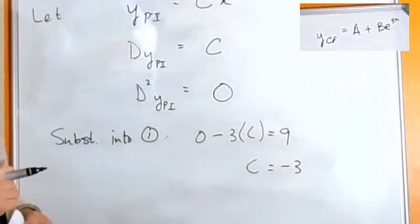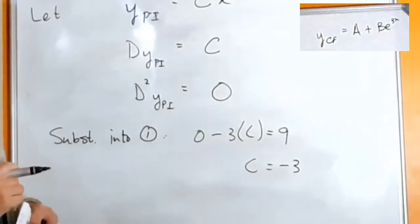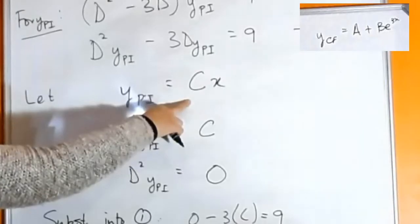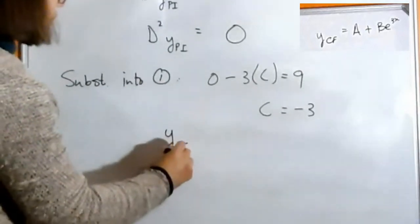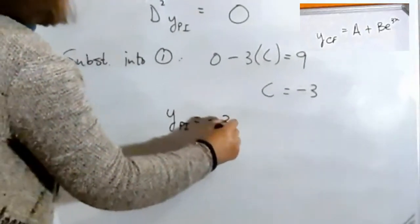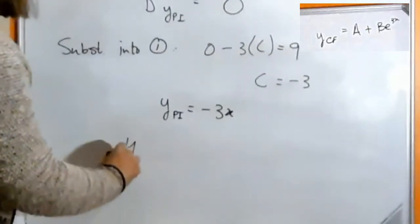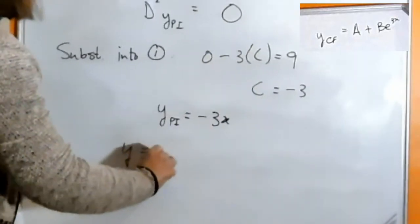Which means that c ends up being minus three. So this one works—this trial function works. So we then know that our particular integral is going to be minus 3x, and we can find the solution for y. And that's going to be Ae^0 + Be^(3x) minus 3x.